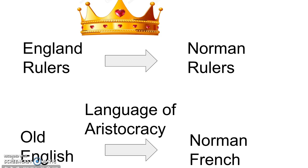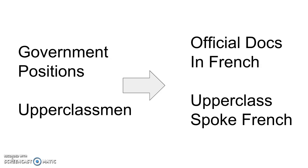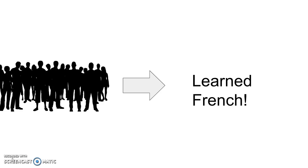This created a more centralized form of government where the authority figures and upperclassmen were Norman. This power shift from English rulers to Norman French rulers had a big impact on the English language, because most written documents were written in French. This made the language of aristocrats French instead of English, and people who wanted to write scholarly documents or work as government officials would have learned French. Because of this, some phrases and words from French were implemented into common language, and once foreign accents and sounds entered common tongue, it modified the development of the English language.